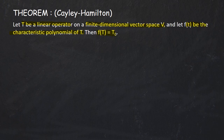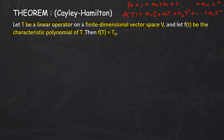By f(T) we mean: if f(x) is the polynomial a₀ + a₁x + … + aₙxⁿ, then f(T) is the operator a₀I — where I is the identity operator on V — plus a₁T plus a₂T², where T² is T composed with T, and so on up to aₙTⁿ. This sum is well defined because the space of all linear operators from V to V is a vector space.